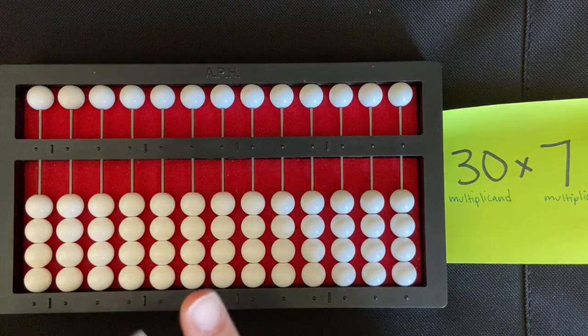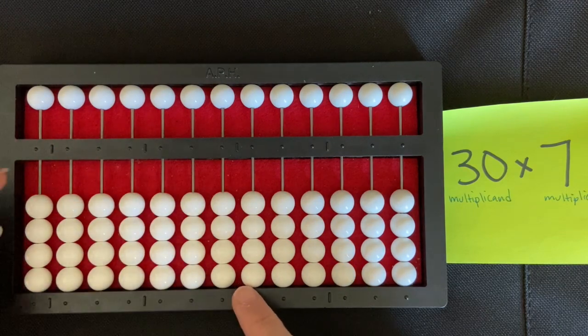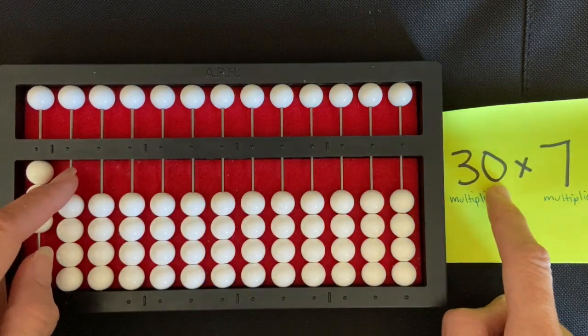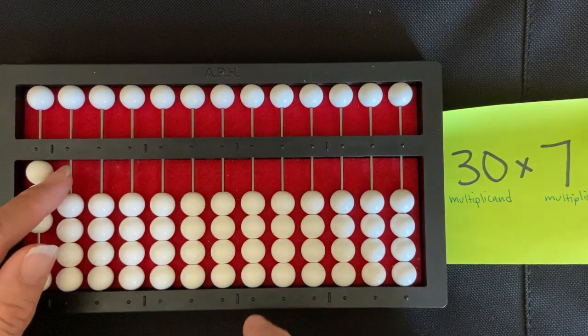Let's start by setting our multiplicand on the extreme left of our abacus. So we're going to set one, two, three, and then there's a zero. We don't set a zero, we just leave it a zero, but we have to remember that it's there.